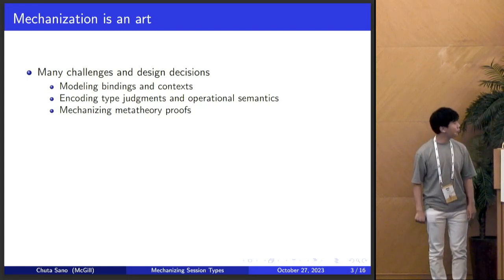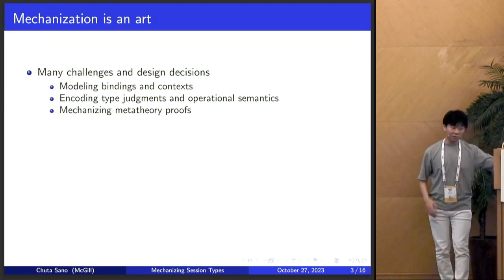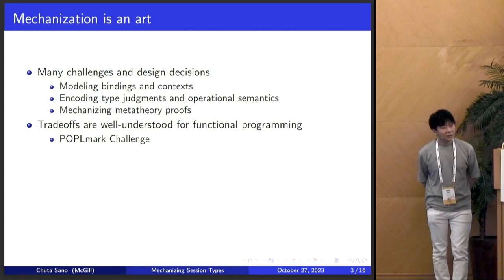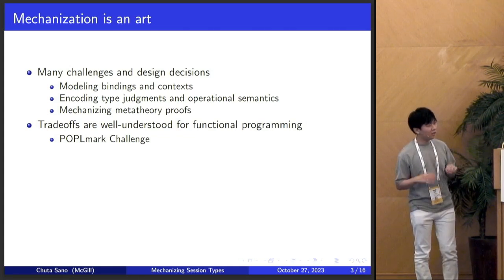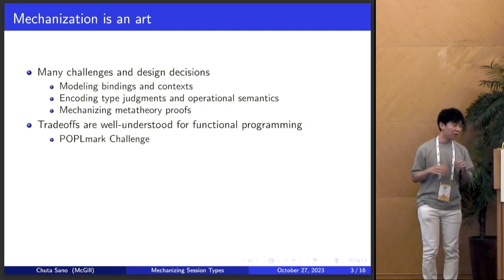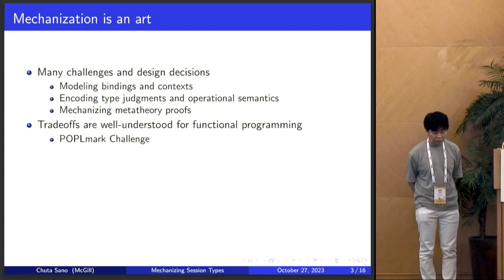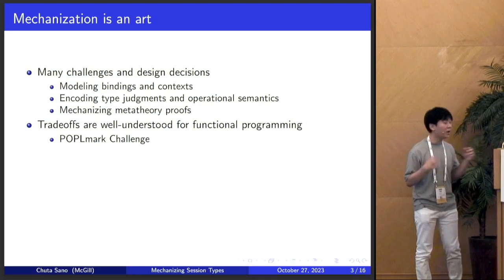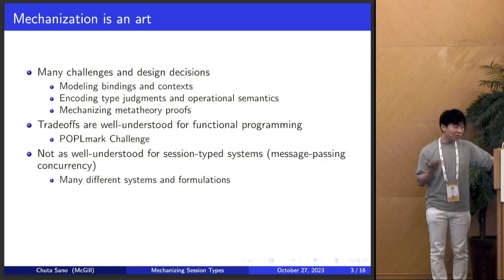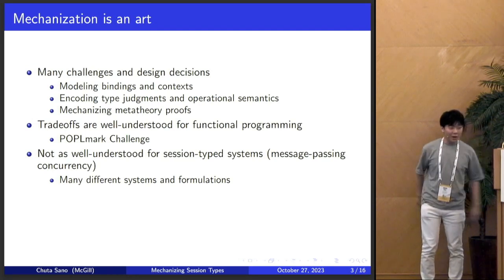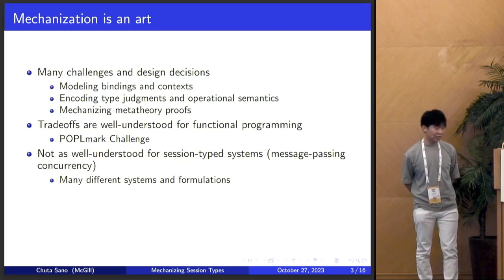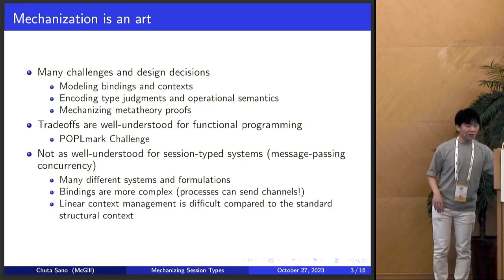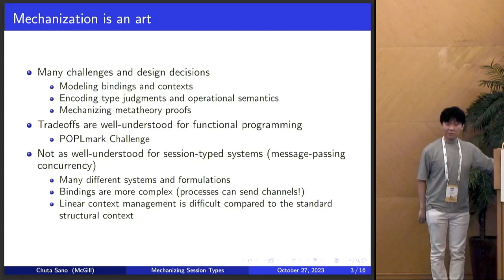In particular, I want to highlight the first point, which is on modeling bindings and context. Most languages have a notion of variable binding. For the functional setting, the trade-offs for all these techniques are fairly well understood — there have been a lot of nice comparisons and a large quantity of mechanizations one can look at to compare. But for session-type systems, which is message-passing concurrency, there are a couple challenges: there are lots of different systems and formulations, making it very hard to compare different mechanizations, and bindings are quite complex compared to the functional setting.